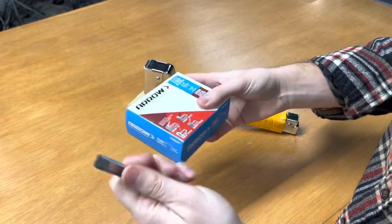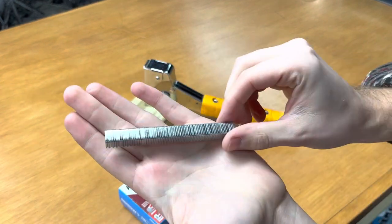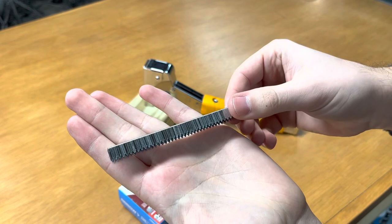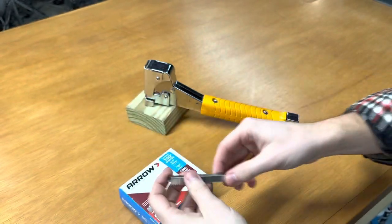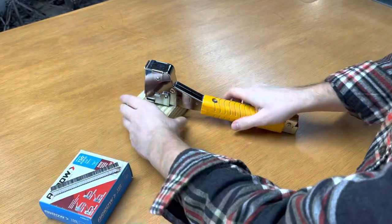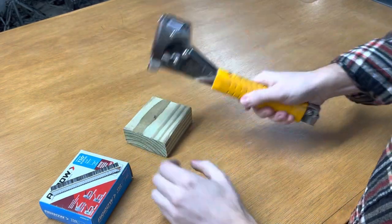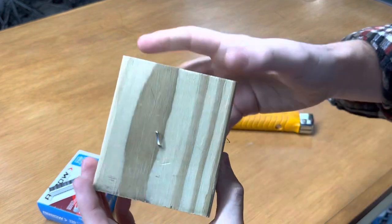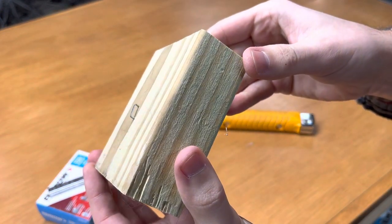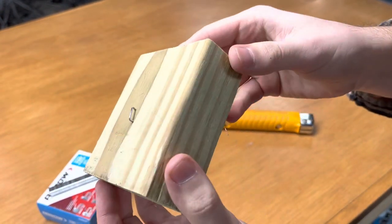This is what those look like for reference - they've got a nice sharp edge on them. I'll just demonstrate this. I've got a little piece of scrap here, give it a good swing, and you can see it puts the staple in right there. You've got to swing this thing pretty hard to drive a staple in.